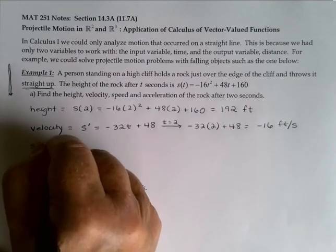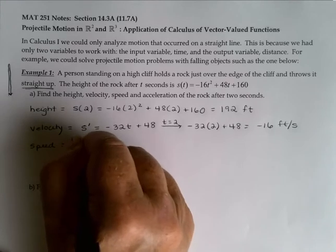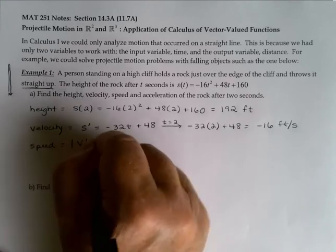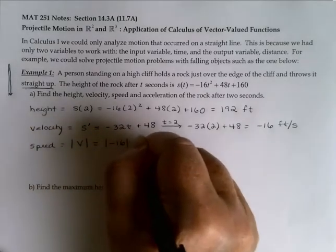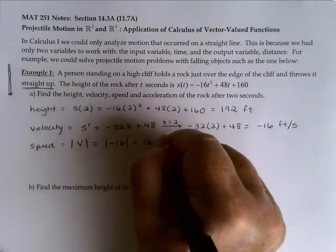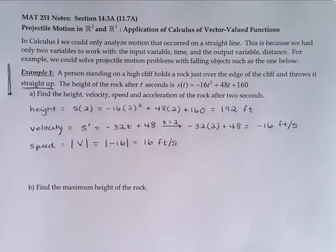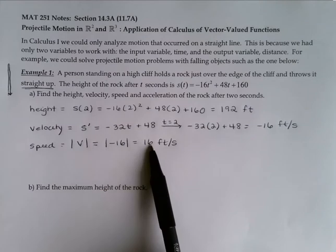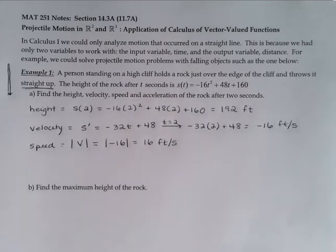Speed would just be the absolute value of the velocity. The absolute value of negative 16 gives us positive 16 feet per second — this doesn't tell us whether we're going up or down, just how fast. Velocity is directed: positive would be up, and negative would be down.